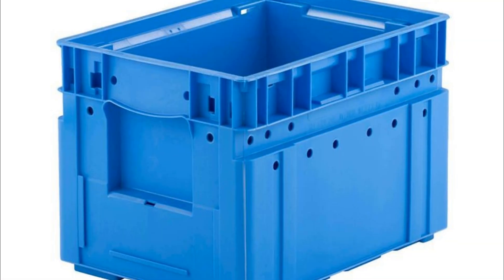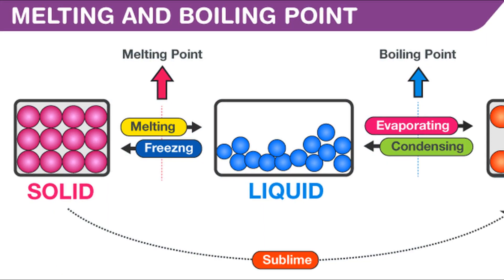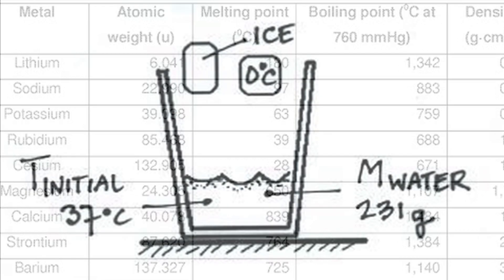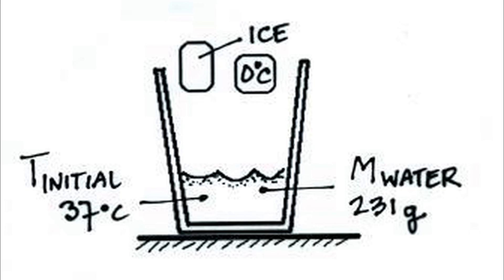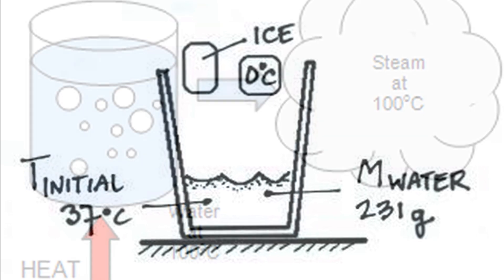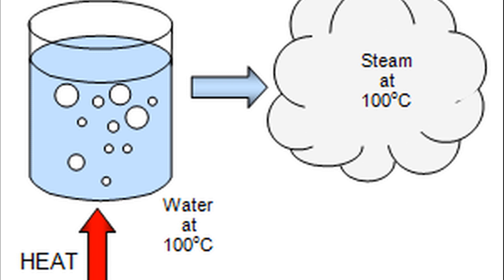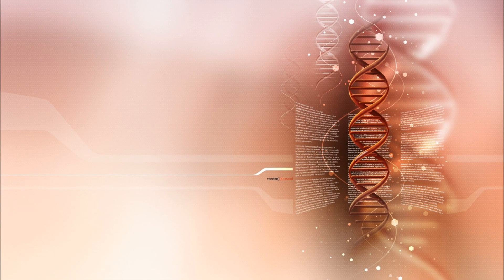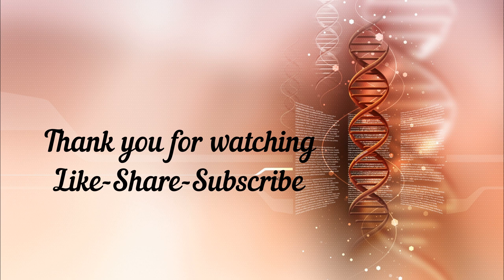Melting and boiling points: Every pure substance has a constant melting point — a fixed temperature at which it changes into liquid — and a boiling point — a fixed temperature at which it changes into a gaseous state. For example, pure ice melts at 0 degrees centigrade and pure water boils at 100 degrees centigrade at normal pressure.